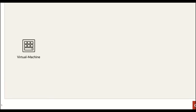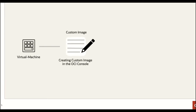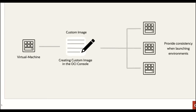Oracle Cloud Infrastructure uses images to launch instances. When you have a virtual machine with an image you're happy with and want to create a custom image of that existing instance, you can do that directly from the console or the API. You can then use that custom image to provide consistent environments with automated deployment — capturing your environment, certifying it, and enabling others in the organization to quickly deploy new environments when required.